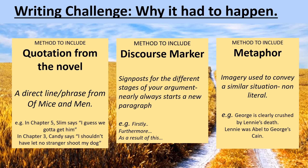Let's look at these methods to include — most of these we've come across before. Quotation from the novel: a direct line or phrase from Of Mice and Men. For example, in Chapter 5 Slim says, 'I guess we got to get him' — quite a loaded message when Slim says that to George. In Chapter 3, Candy says, 'I shouldn't have let no stranger shoot my dog.' We talked before about the similarity between Candy having the dog shot and George having to shoot Lenny — the idea of responsibility coming up again. Discourse marker: it's the signpost in your writing, usually starting a new paragraph, almost always with a comma straight after it — the bit where you say 'and now I'm going to talk about something else.'